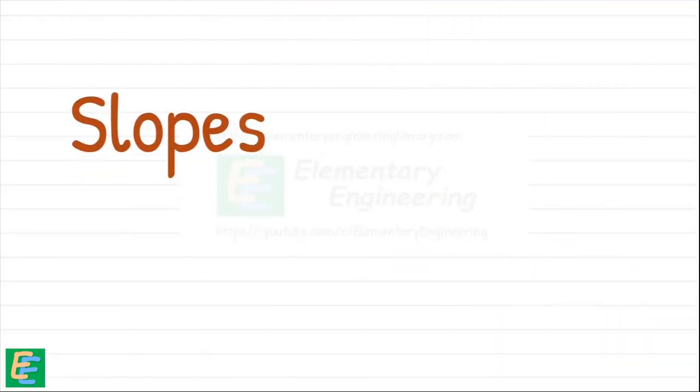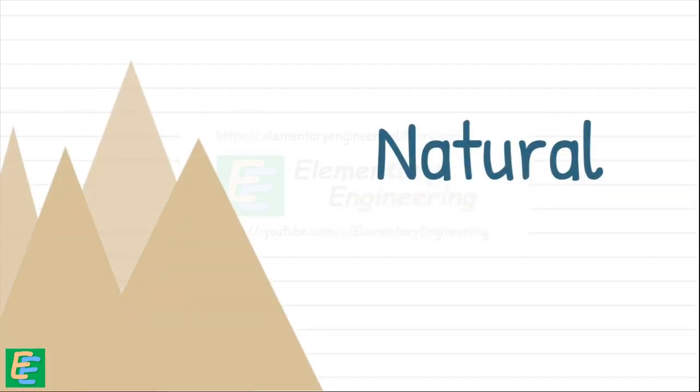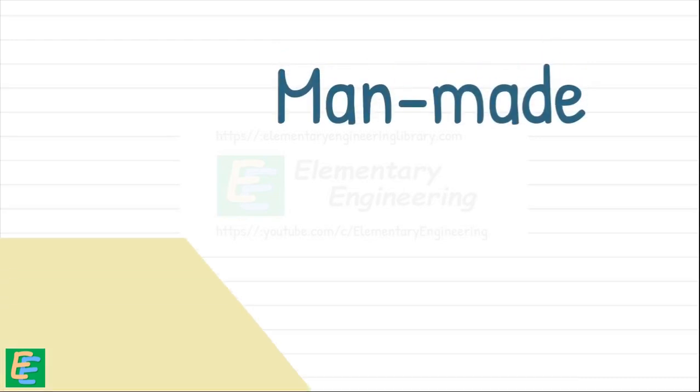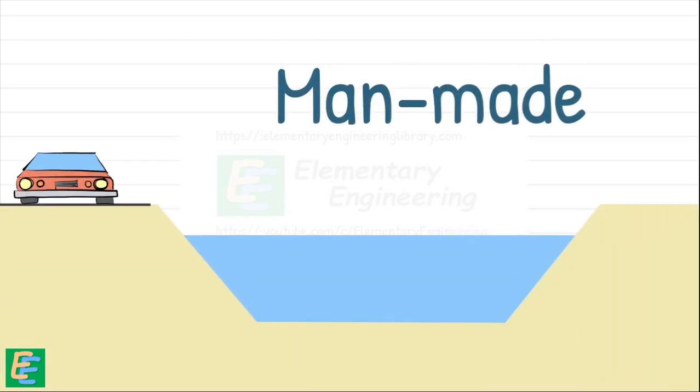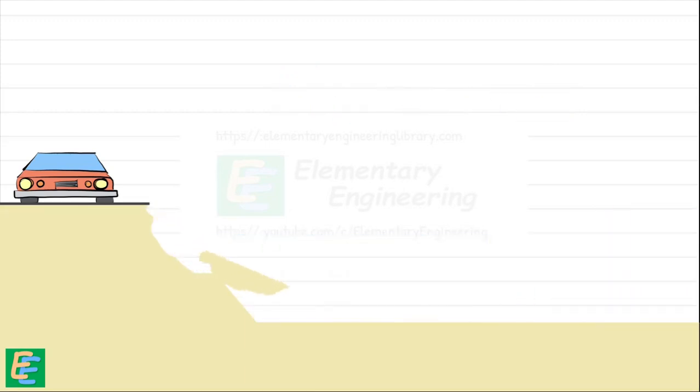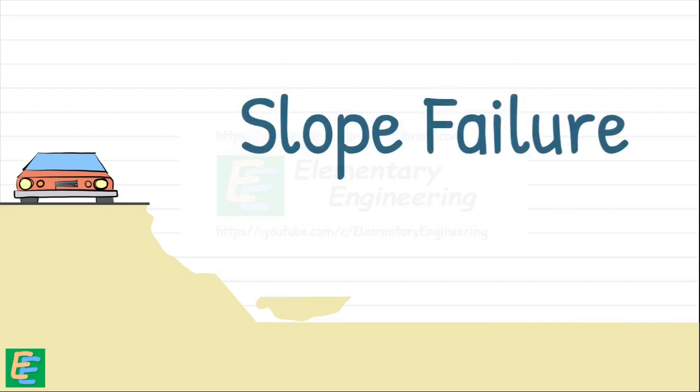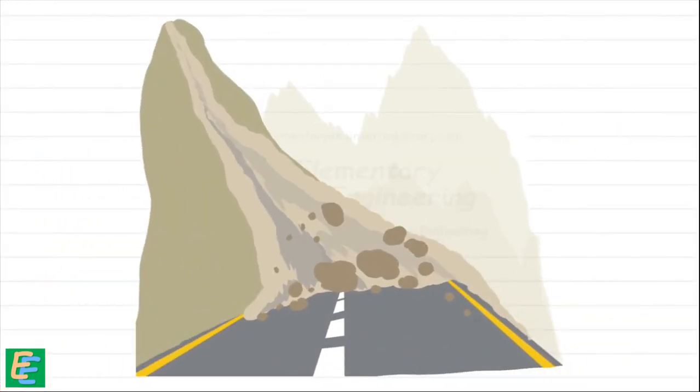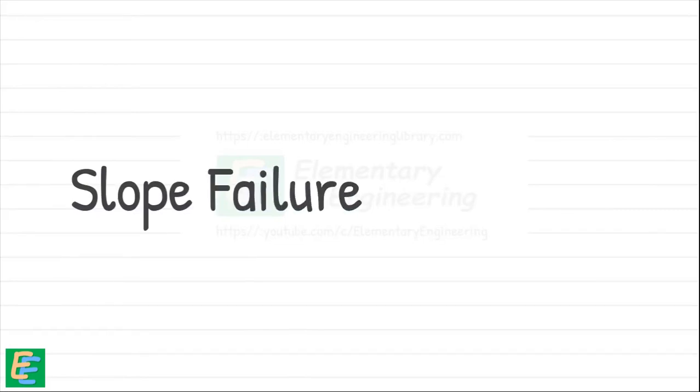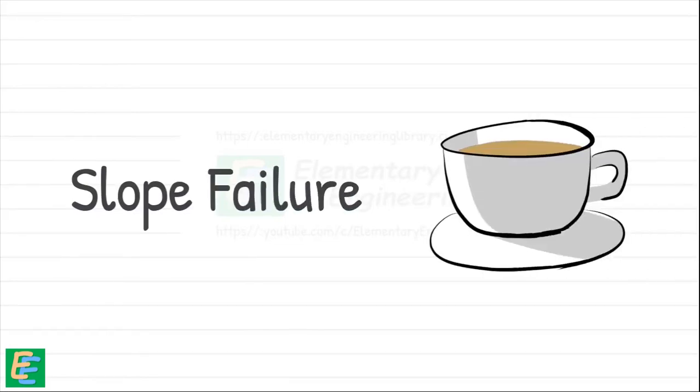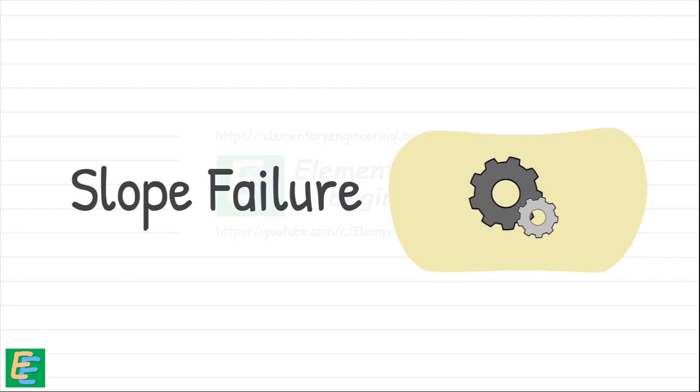So what are these slopes? They are like the paths that connect different heights. Think of natural hills and mountains or even man-made structures like highway embankments and canal banks. These slopes can be a bit tricky because they tend to move around to find a more stable spot. When they do, it's called a slope failure and that's when things get messy like roads getting blocked. Slope failure might not be the term you hear every day, but it's a serious issue in geotechnical engineering.